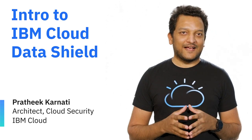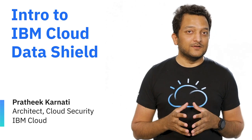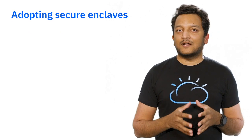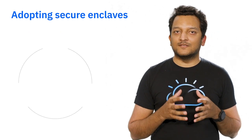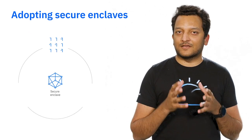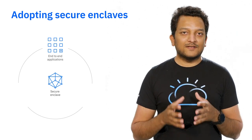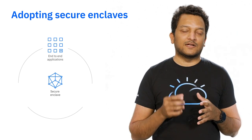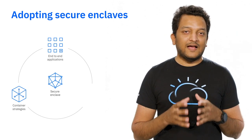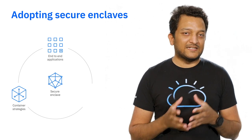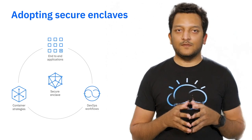Confidential computing protects your data in use through hardware-based trusted execution environments, otherwise called enclaves. But how do you adopt secure enclaves to truly protect your applications end to end? How does this align with your container or Kubernetes strategy? And do you need new skills or additional DevOps workflows to adopt them?